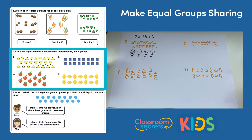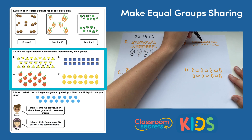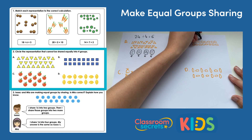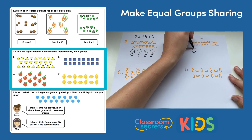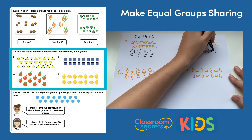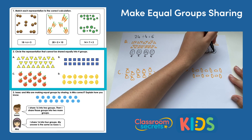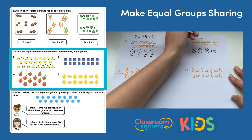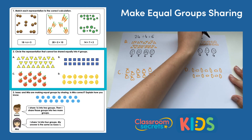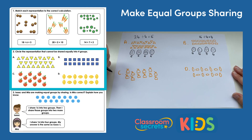Remember, we're looking for the representation that cannot be shared. Let's move on to the squares. Counting them up: sixteen squares. Let's see if we can share them equally into four groups. I've got four in each group and the groups are equal, so I can also share the squares into four equal groups.